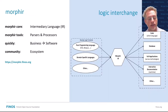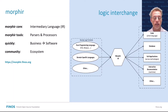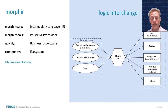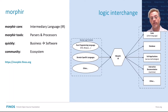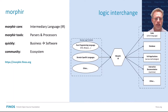At its core, Morpher is a set of tools aimed at logic interchange. We can define a set of logic and put it into a data format — in this case, the Morpher intermediary language or IR. Once it's in a data format, we can do all kinds of things with it, just like any other data. We can use that format to generate code that runs in different runtime contexts, generate configuration and database setup, and even generate full applications. On top of that, we can generate documentation, lineage, and all these other things the enterprise asks us to do.